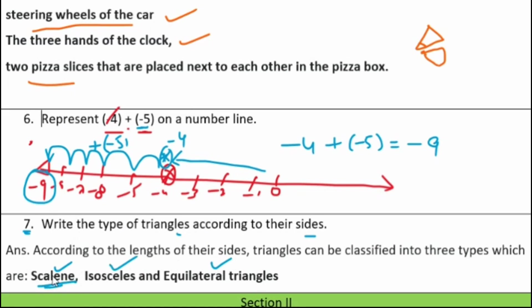In a scalene triangle, all sides are unequal. In an isosceles triangle, two sides are equal. In an equilateral triangle, all three sides are equal.